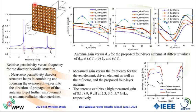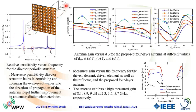We used this structure and made a study for the relative permittivity. The near-zero permittivity director structure helps in combining and focusing the evanescent waves. We studied the relative permittivity and it gives near-zero permittivity at three bands. Also, we made a study of the position of the director and the reflector, studying the space or distance between the reflector and the driving element and the director at different values.